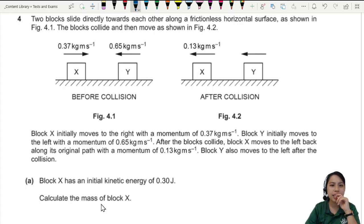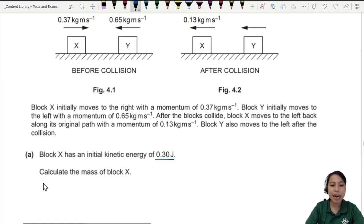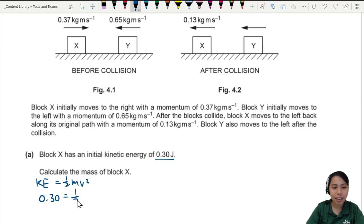Did they give us any information for mass? I don't think they did, but they did give us kinetic energy. So I guess I'll start with that. We stay calm and just write what we know: KE is half mv squared. And then I sub in what I know: 0.3 is half... oh no, I don't know what m, I don't know what's v.